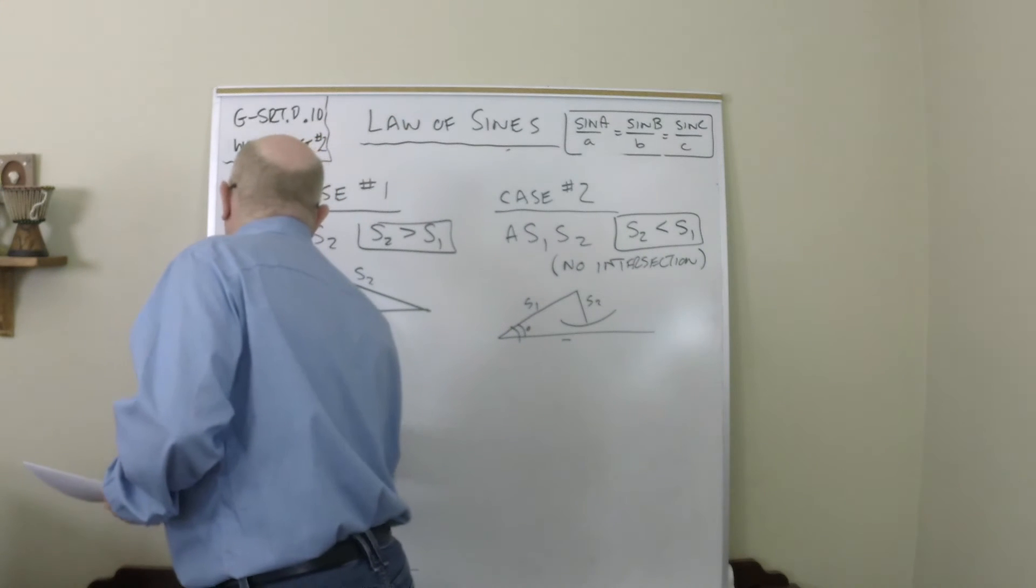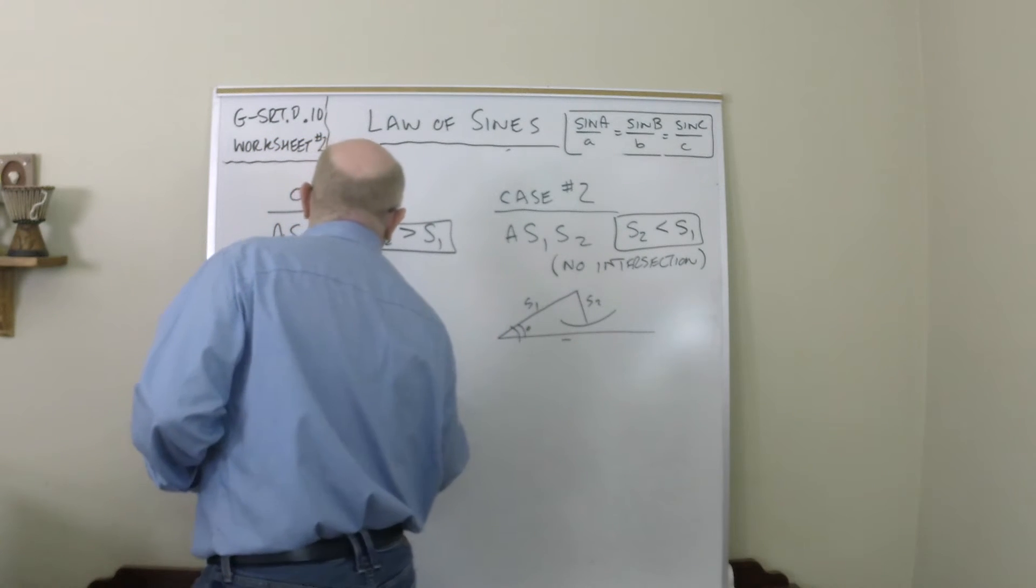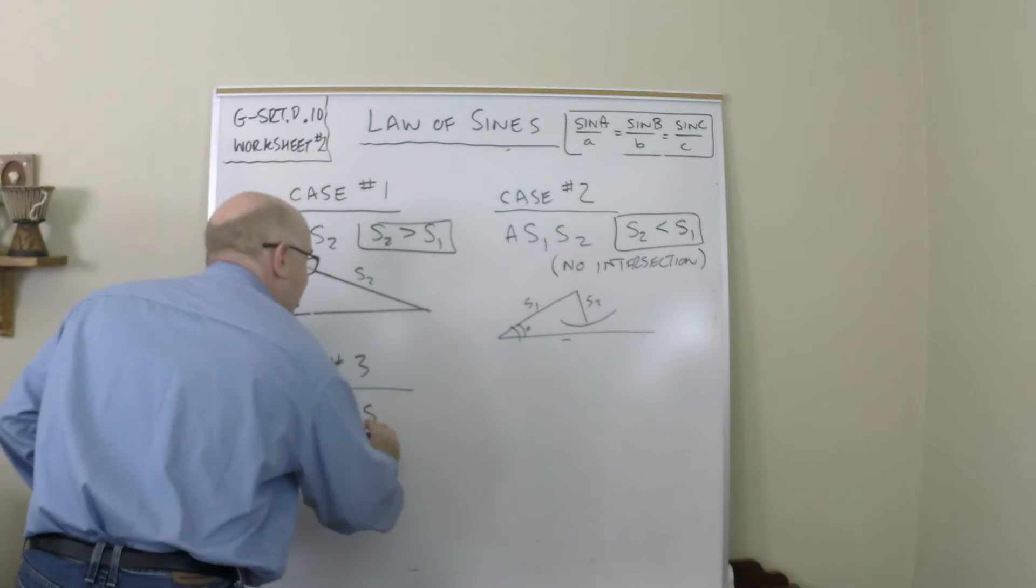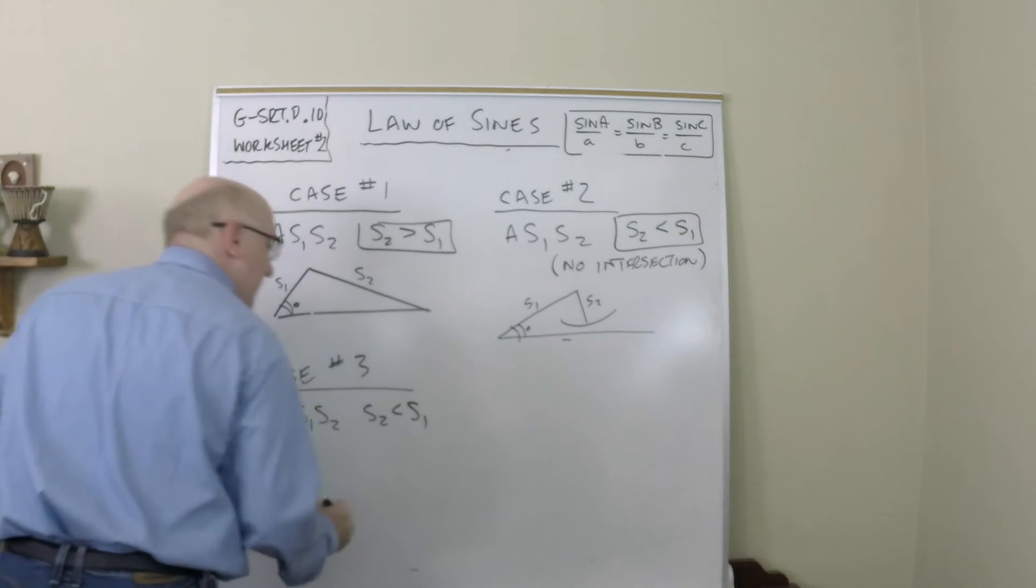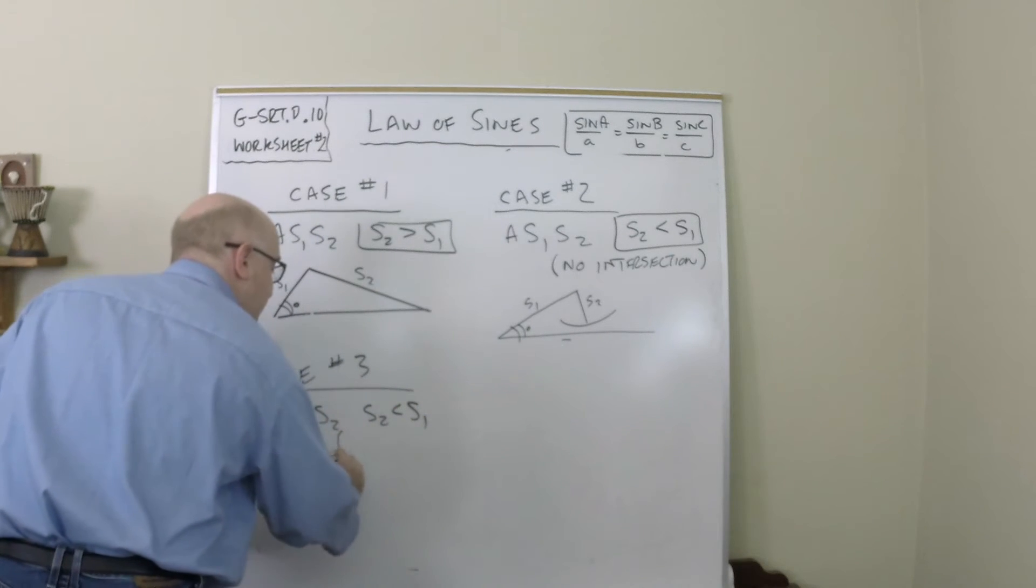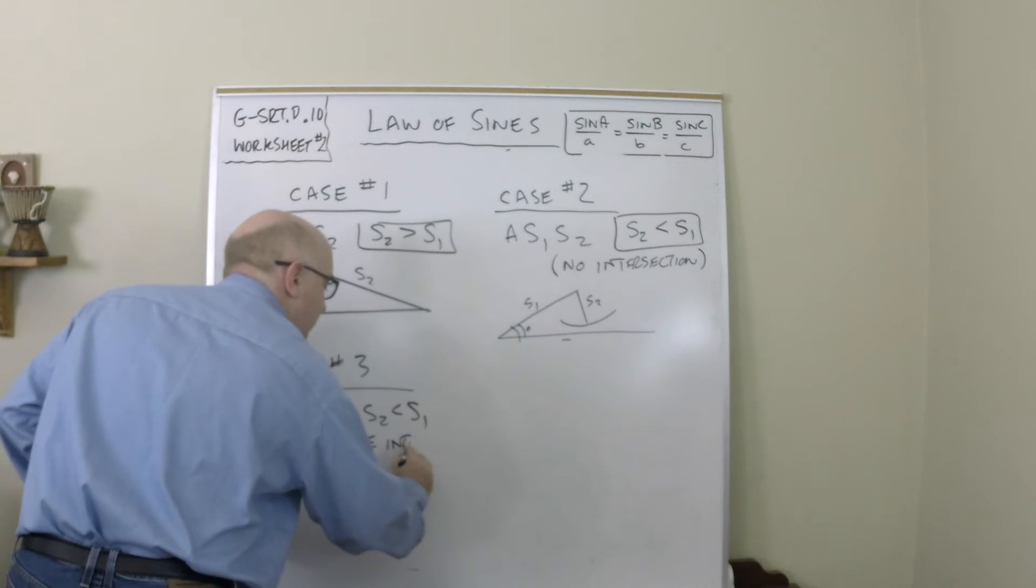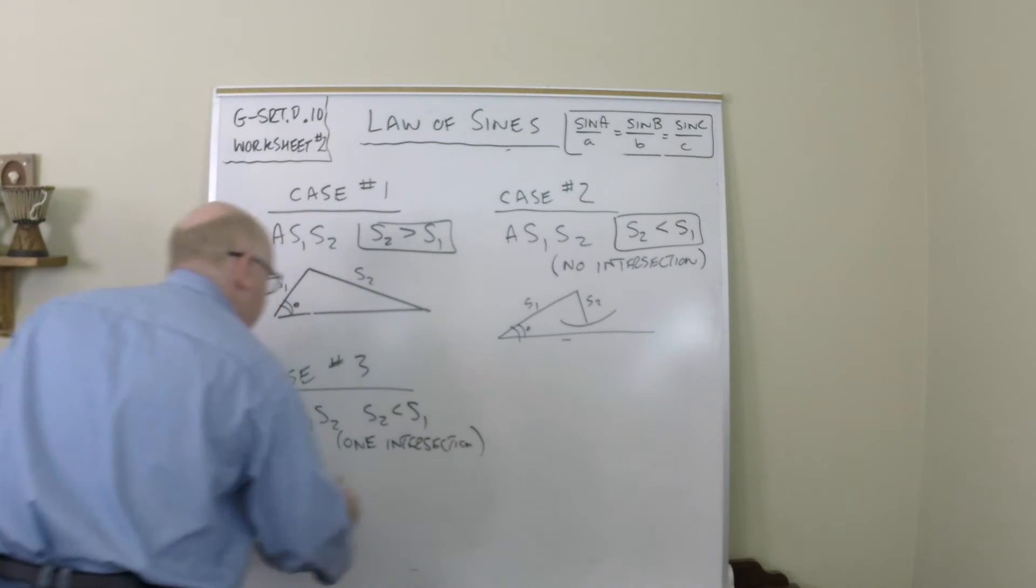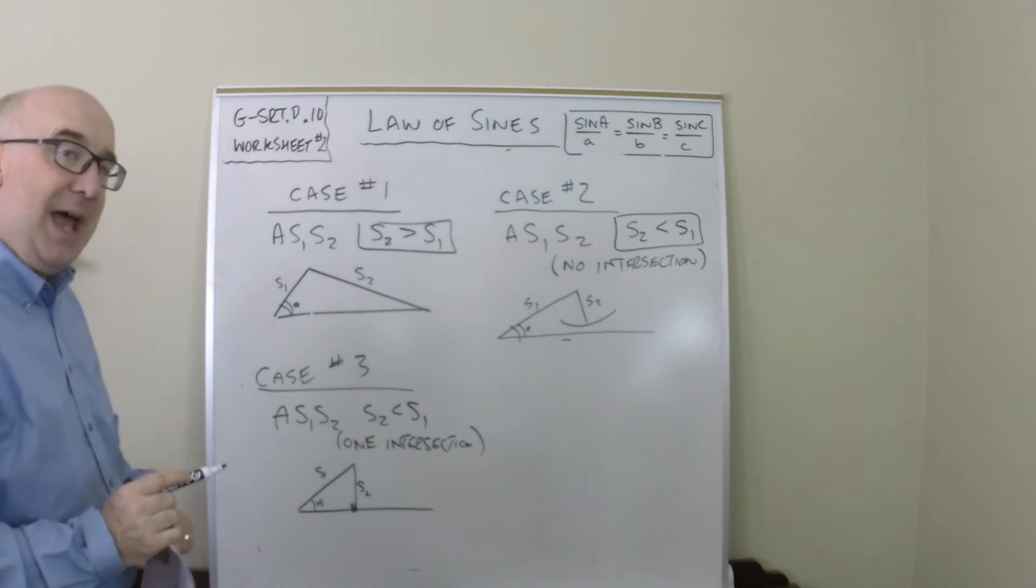Case 3 is where, again, angle side side where side 2 is shorter than side 1, but has one intersection. Now what that means is that when we drew this angle, angle here given side 1, side 2 is exactly the right amount to close that off.